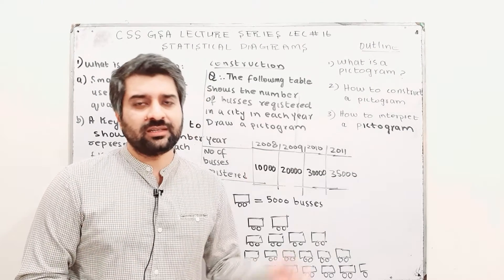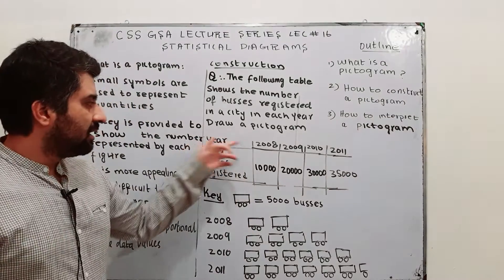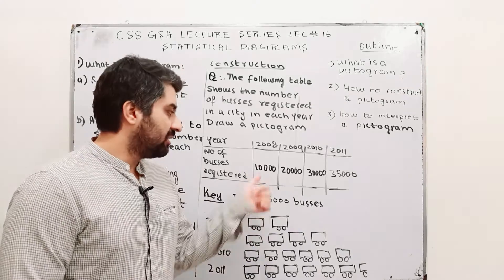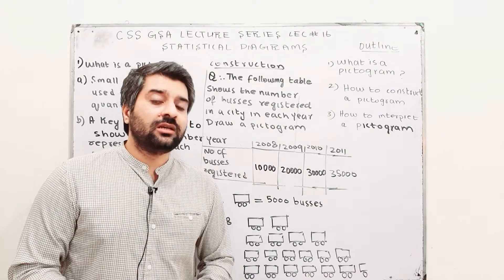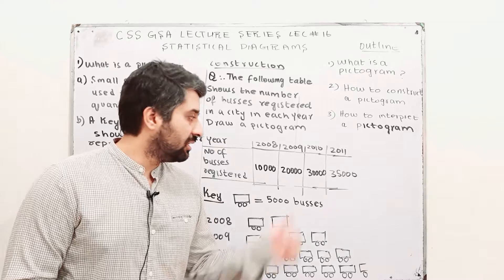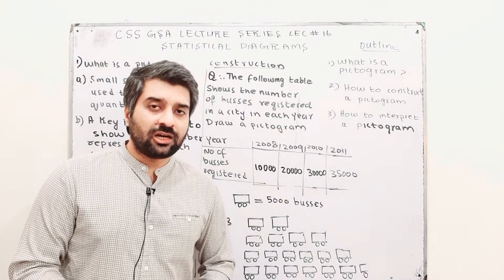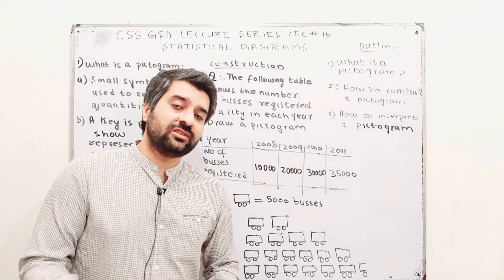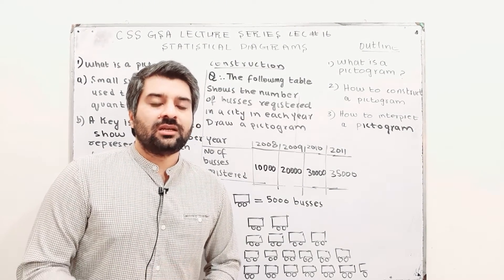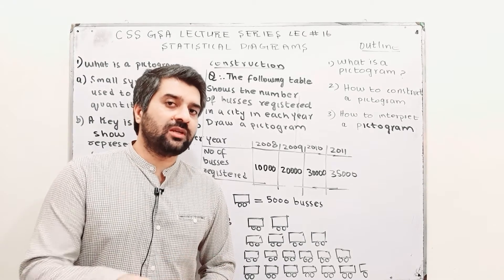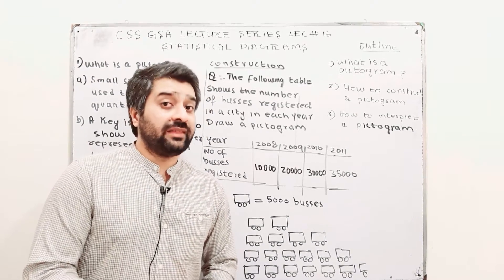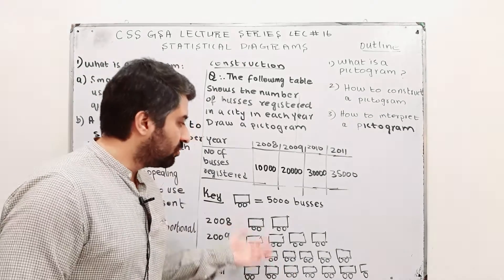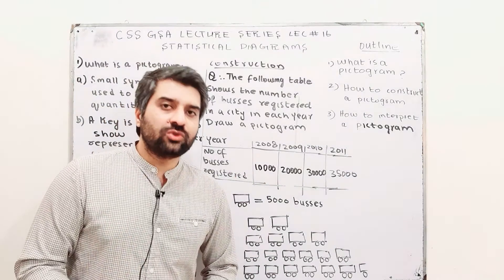This table shows the data values. In year 2008, the number of buses registered in a particular city was 10,000. In 2009, it was 20,000. In 2010, it was 30,000. And in 2011, it was 35,000. This is the given collected data, and we are going to display it using a pictogram. Interpretation is the next part.